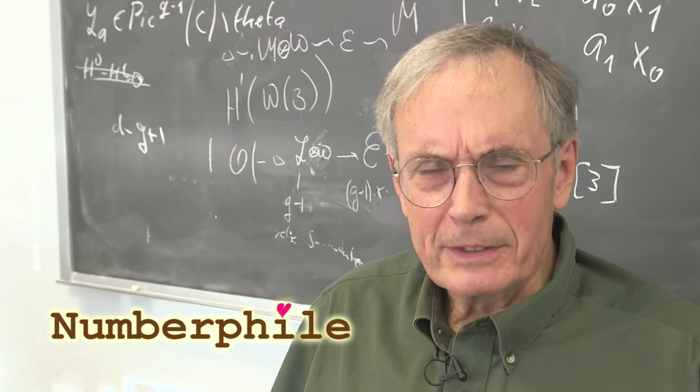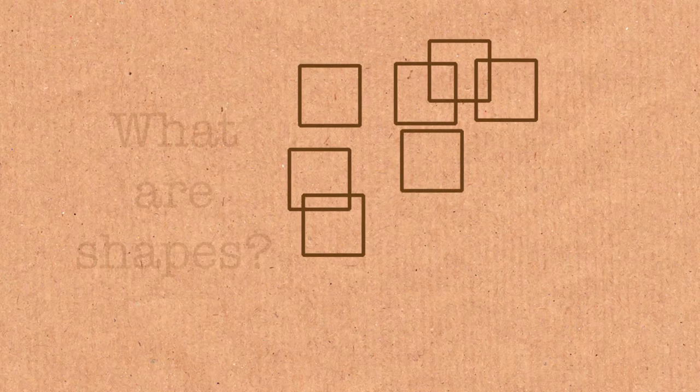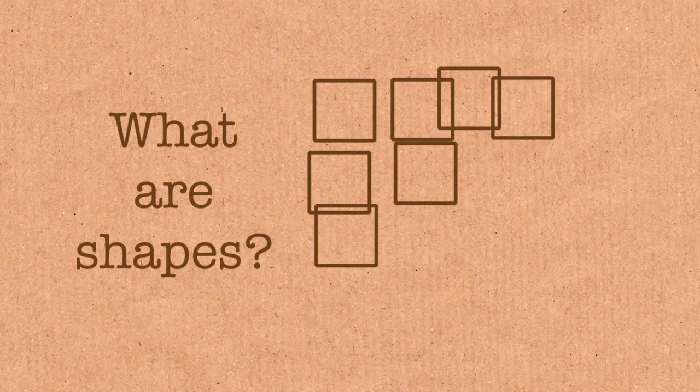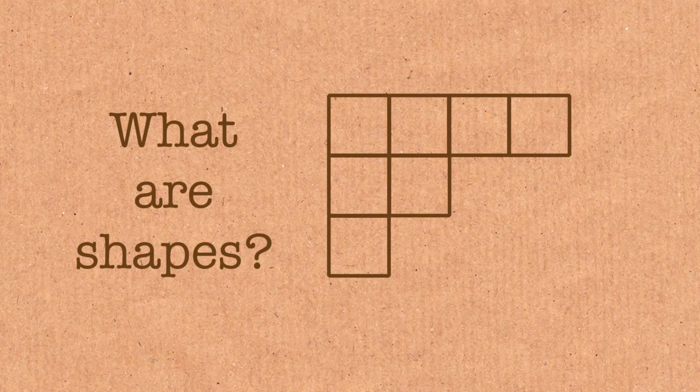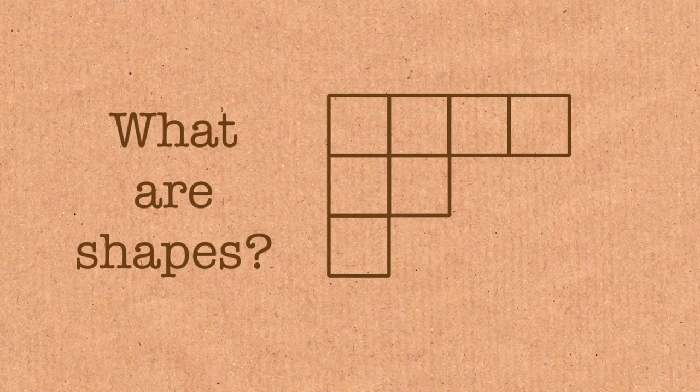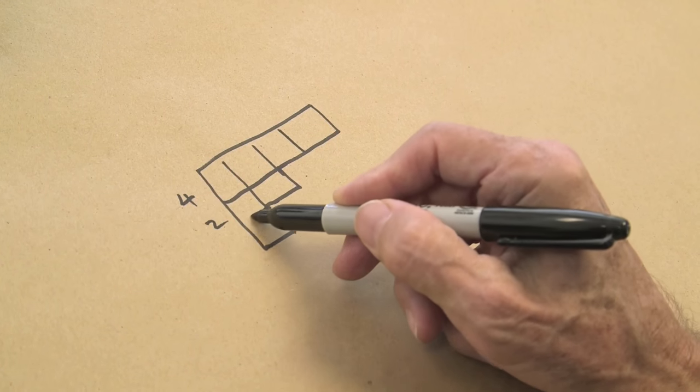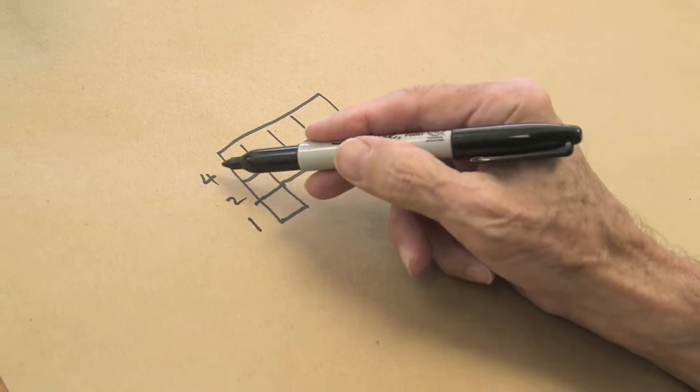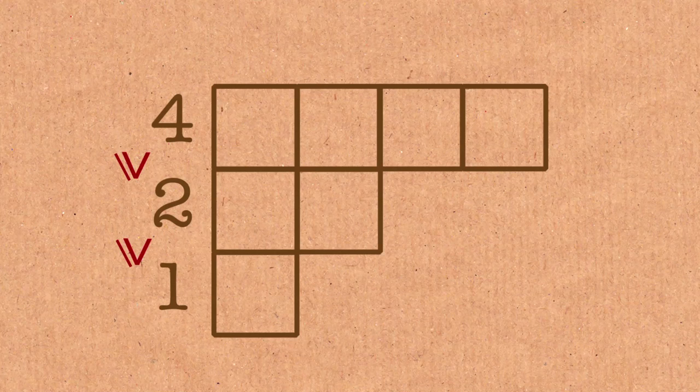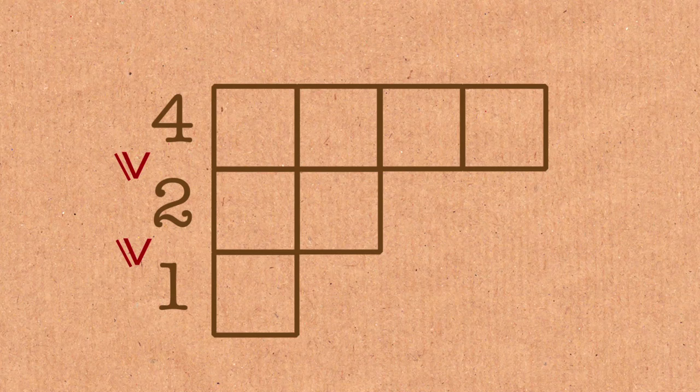We're talking about a problem involving putting numbers into boxes and other shapes. A shape is an arrangement of boxes that looks something like this. I've got a certain number of boxes in the first row - four boxes in the first row, two in the second row, and one in the third row. The rule is that these numbers must be decreasing, and the second rule is that the boxes are left justified. That's the rule.